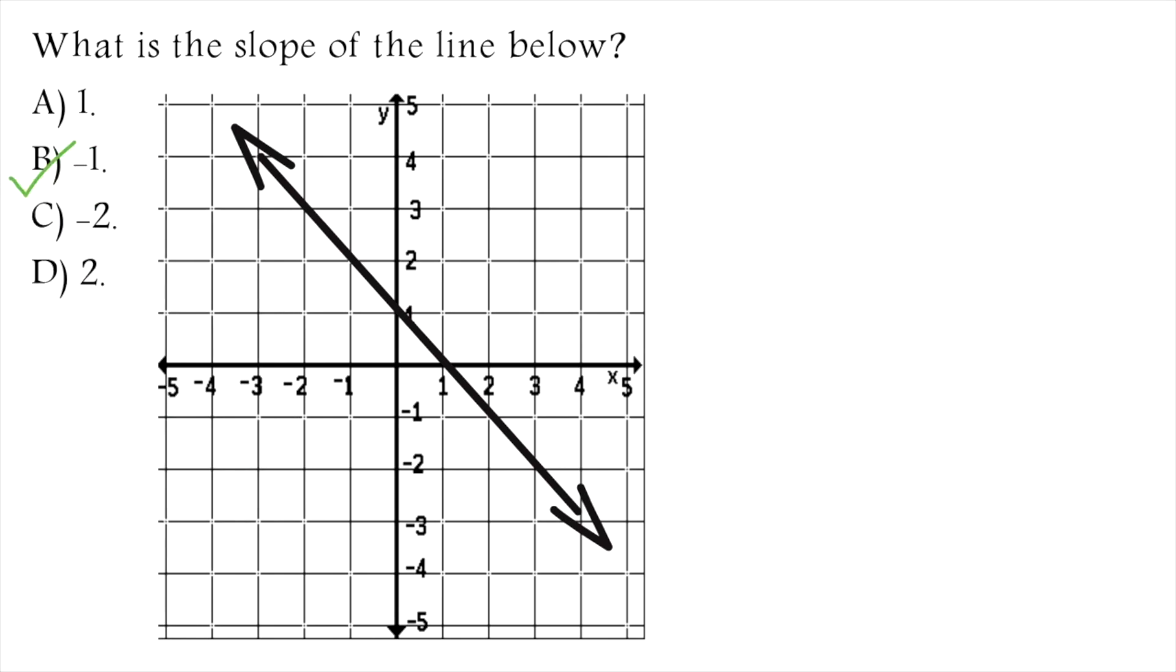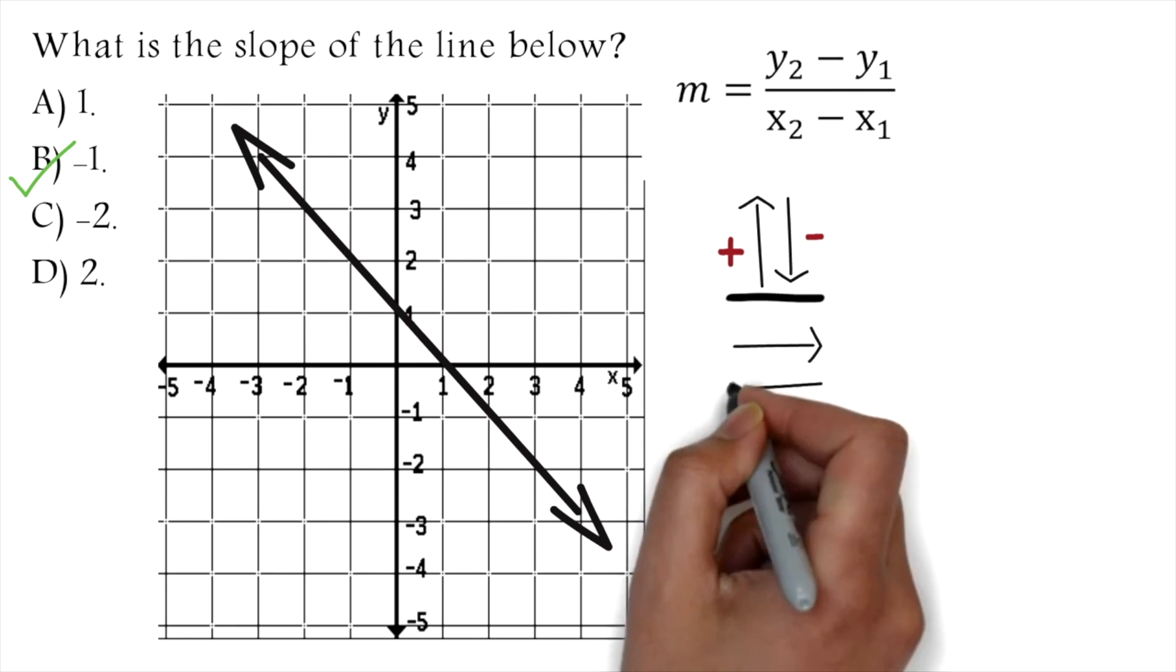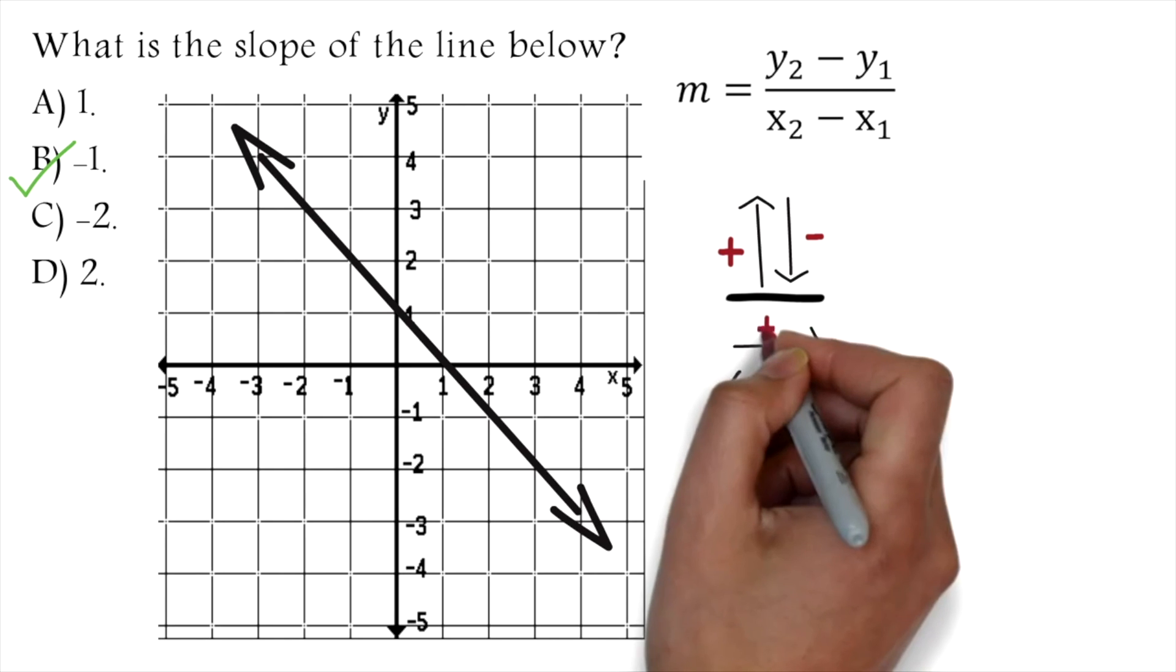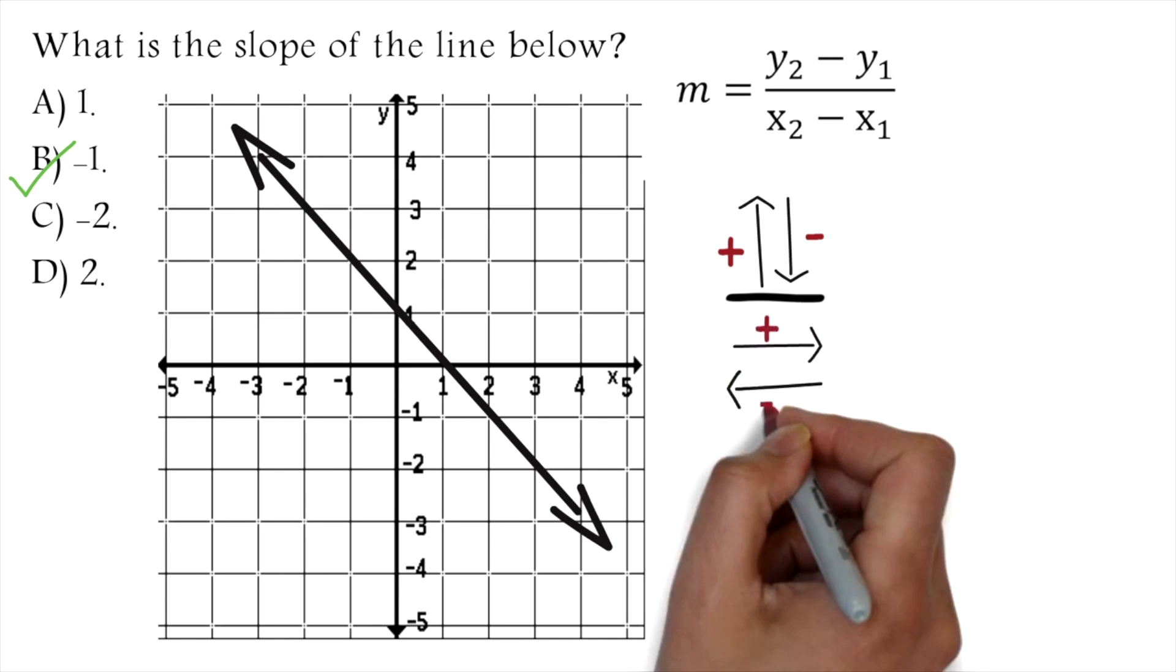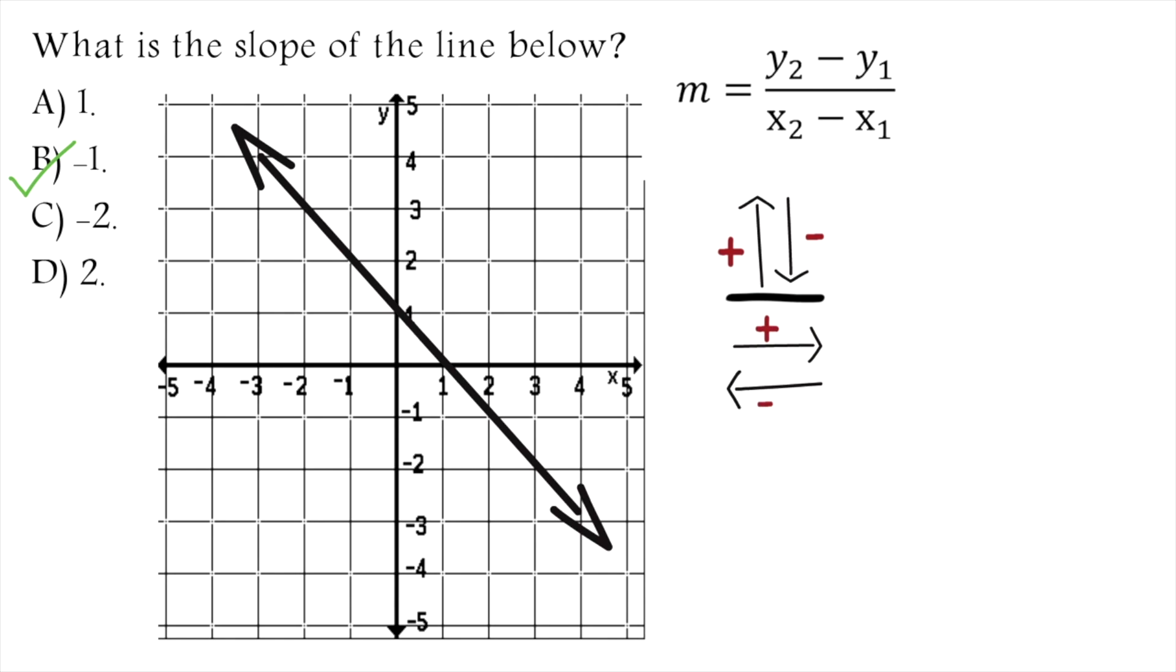The slope of a line is the change in y over the change in x. We know that the change in y simply means how many points you are going up or down. If you are going up, then you have a positive change. If you are going down, then you have a negative change. The change in x simply means how many points you are going to the right or left. If you are going to the right, then you have a positive change. If you are going to the left, then you have a negative change. Let's look at our question. Our first step will be to choose any 2 points on the line. I am choosing these 2 points. Let's call it a and b, you can choose any 2 points on the line.